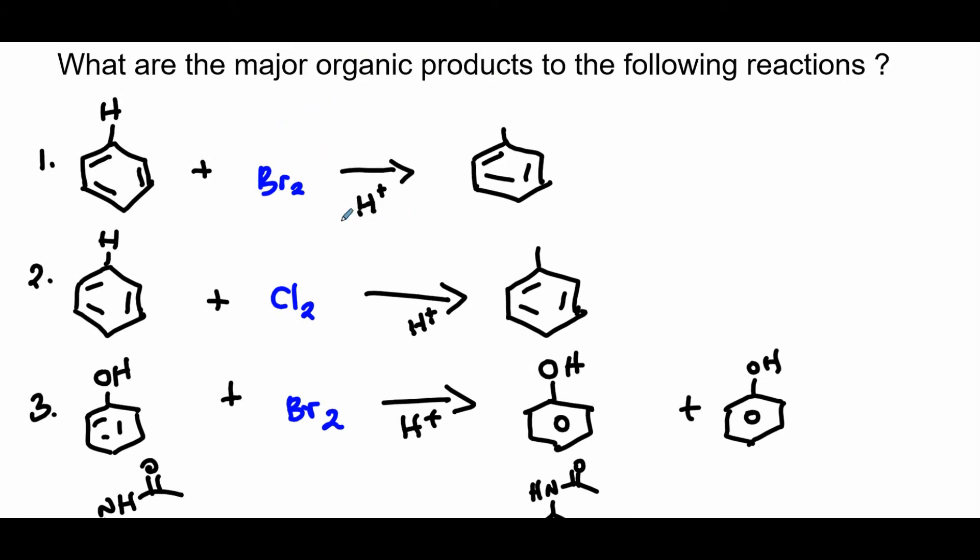All right, again just assume you have acetic acid on there. Here the electrophile is Br+, so that's what's going to substitute that hydrogen. In this case the electrophile is Cl+, so we put our Cl there to substitute the hydrogen.